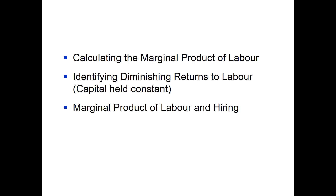In the first example we looked at the case where we increase both labour and capital by the same proportion. In this video we're considering the case where we hold capital constant and increase labour, so we're thinking about the marginal product of labour. We'll look at that concept first with a couple of graphs, then we'll look at how we can identify diminishing returns to labour — where the marginal product of labour decreases as labour increases. Finally we'll think about the relationship between the marginal product of labour and hiring decisions.